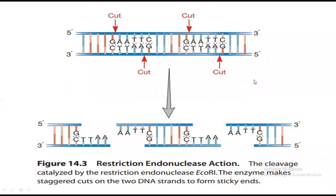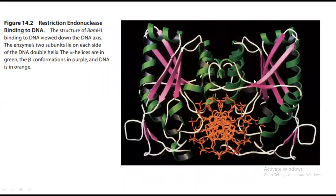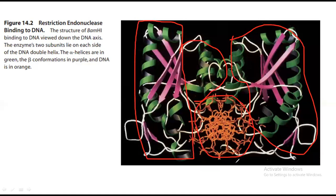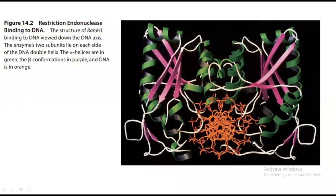Now I will tell you the mechanism of action. This is a typical structure of restriction enzymes taken from Chimera or NCBI. The orange portion is the DNA — it is acting over the DNA — and these other parts are the restriction enzymes acting upon the DNA. So this is a matrix structure of the restriction enzymes.